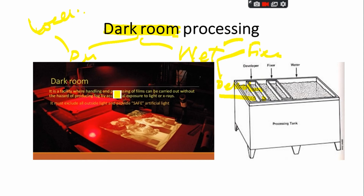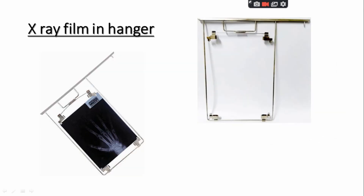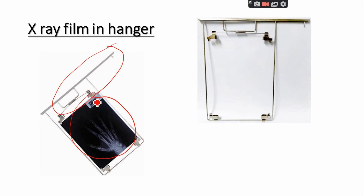In the dark room you will see the developer and fixer. After conducting the x-rays, you pour your radiograph here, then rinse it with water, and your radiograph is ready. You then take an envelope, put the radiograph inside, and hand it over to the owner of the animal. The x-ray film hanger is used to handle the x-ray film and place it into the fixer and developer tanks.